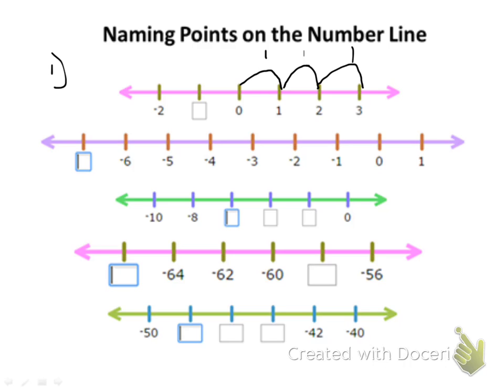And the other direction, we get smaller. So if I go from 3 to 2 that's 1, 2 to 1 is minus 1, 1 to 0 is minus 1. What will go between 0 and negative 2? That would be negative 1, because we're just decreasing by 1, or moving by 1 each time.